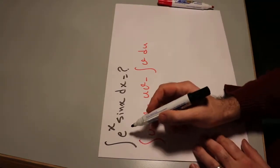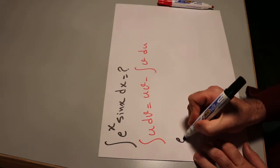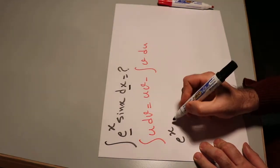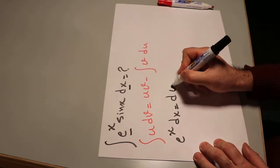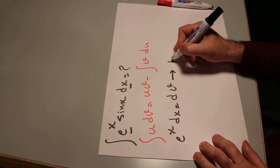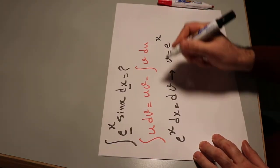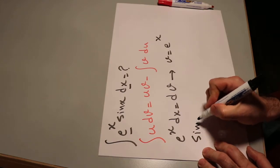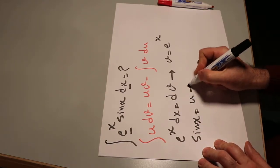So here I define e^x times dx as dv. Therefore, v will be equal to e^x. And I define sin x as u. Therefore,